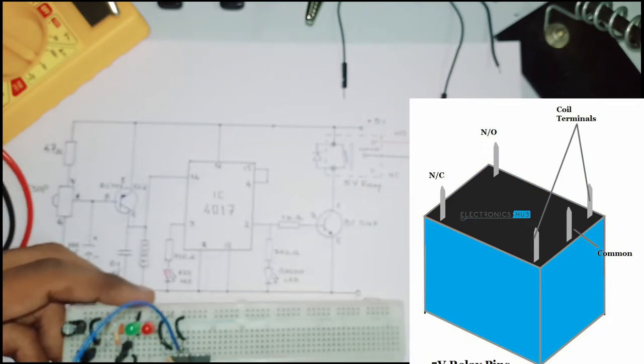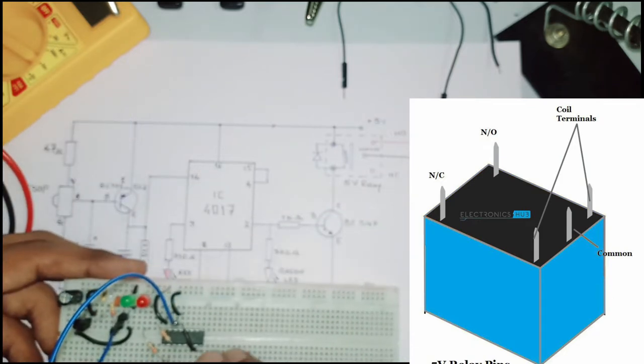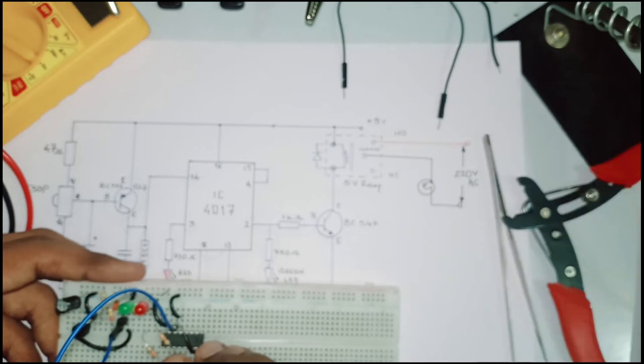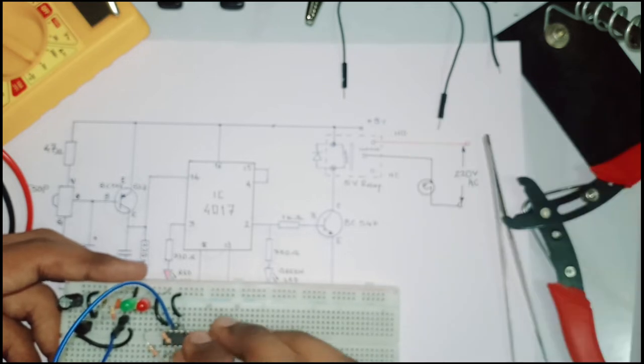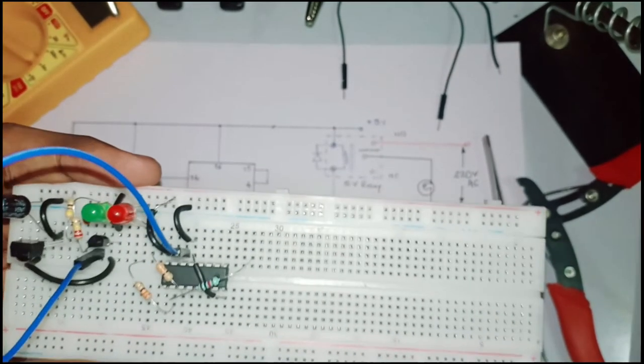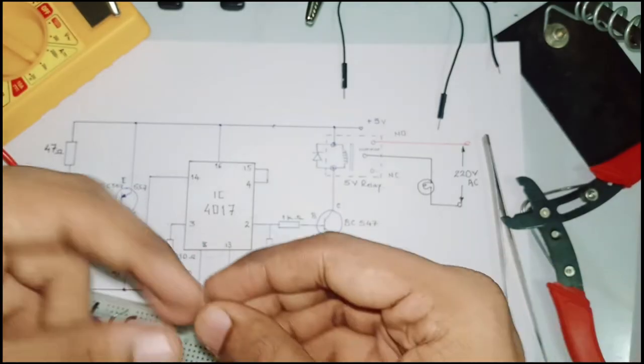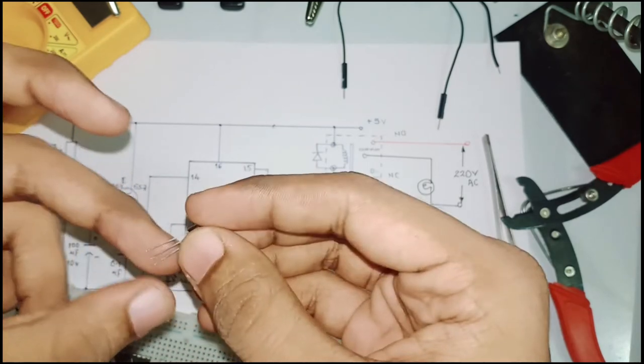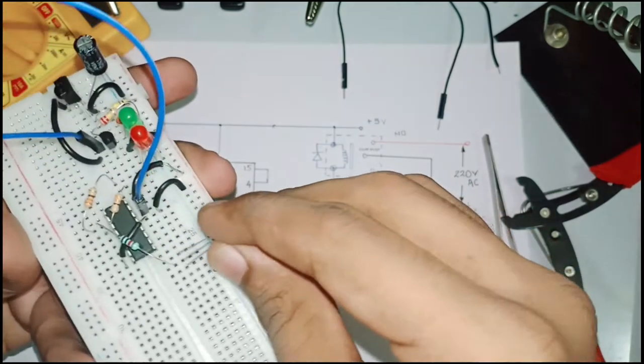Now the last thing that we have to connect in this circuit is the relay. A relay is a switch that is electrically operated and it has got five pins. Out of these, two are for a coil, one is for common, and the remaining two are NO and NC. The NO is the normally open and NC is normally closed. When current flows through the coil, the common pin and the NO pin gets shorted, and this is our ultimate goal to control the current.